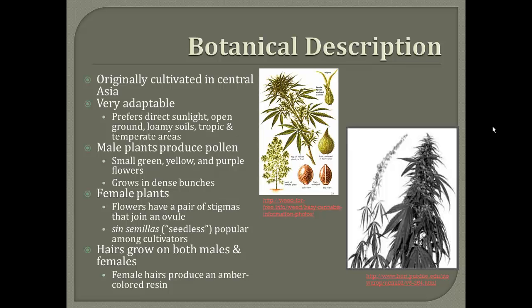The male plants are taller and grow in dense bunches. They produce the pollen, which is transferred over to the female plant. Their flowers are also a lot smaller than female plants, and they're usually shades of green, yellow, and purple. Even if wind hasn't been adequate enough to transfer the pollen from the male plant to the female plant, they can still grow. Sinsemillas, which means seedless in Spanish, are types of marijuana plants that are really popular among cultivators today because of the high amount of THC produced by the continually growing buds.